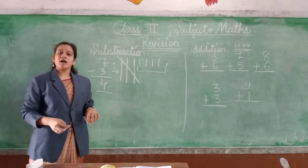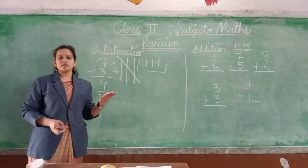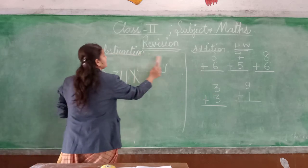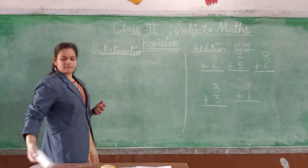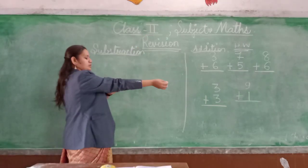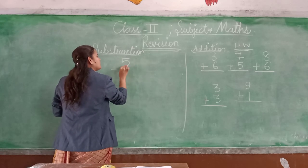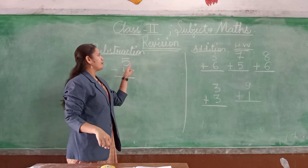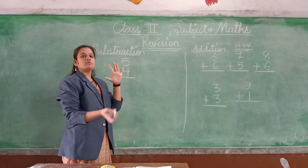So this 4 you will write down as the answer. Now we can also do subtraction with our fingers, just as we have done in addition. For example, 5 fingers we have opened.